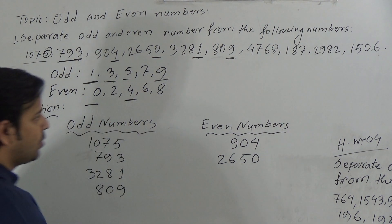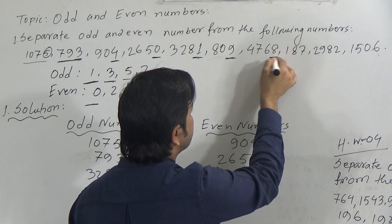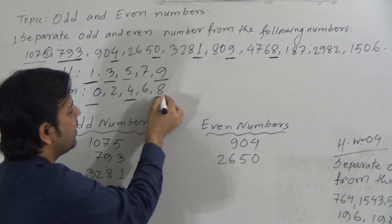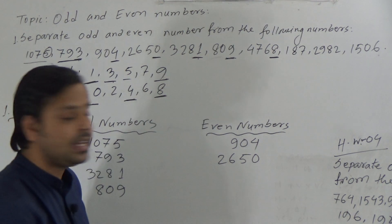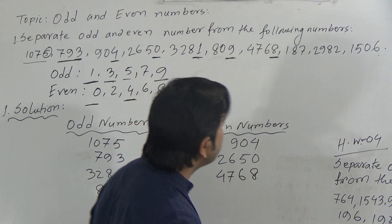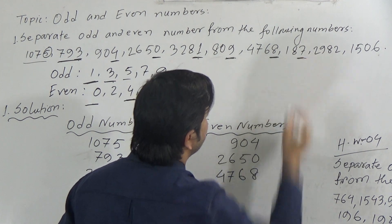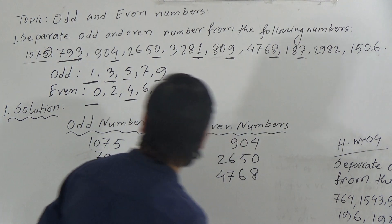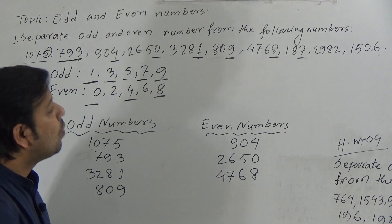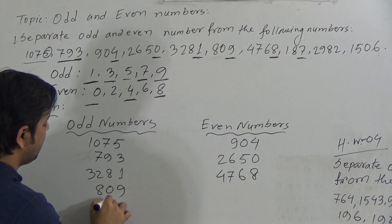Dear students, the next number is 4768. Here the unit place is 8, and 8 is an even number, so 4768 is even. The next number is 187. Here 7 is in the unit place, and 7 is odd, so 187 is odd.